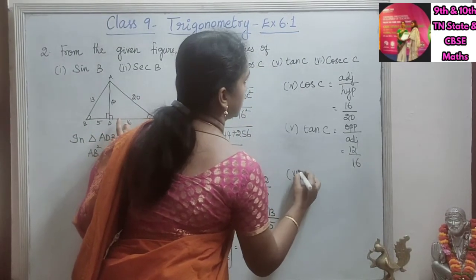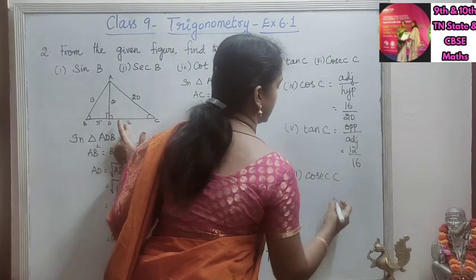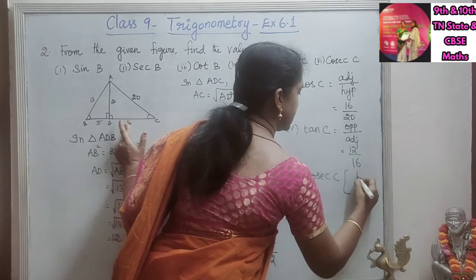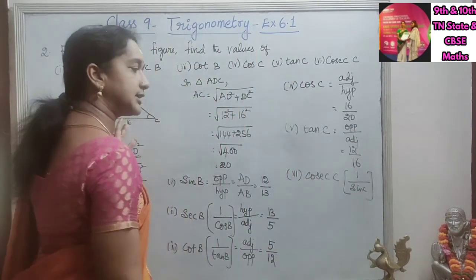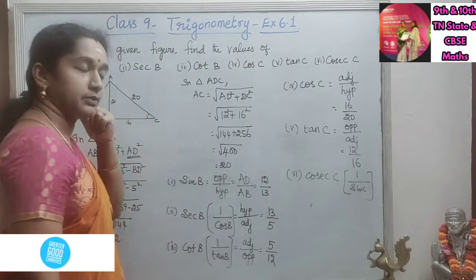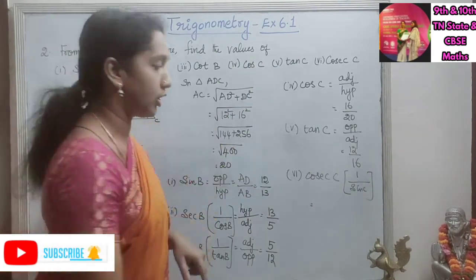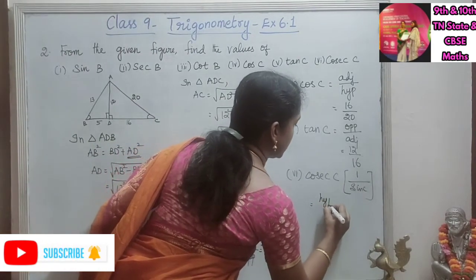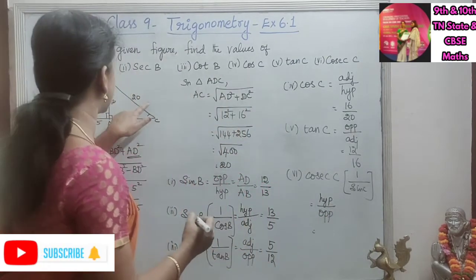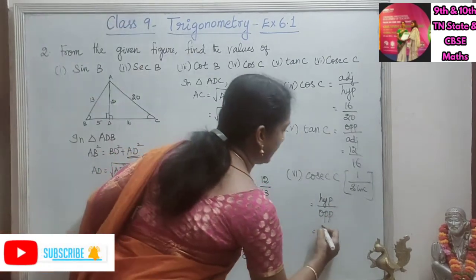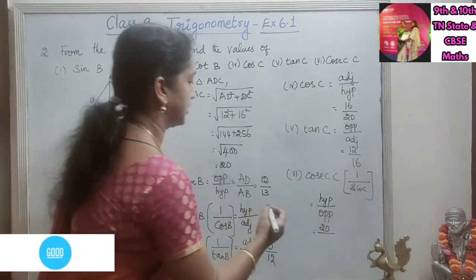The sixth one is cosecant C. Cosecant C is 1 by sin C, that is the reciprocal of sin C. So cosecant is hypotenuse by opposite — hypotenuse side is 20 and opposite side is 12. So cosecant C is 20 by 12.